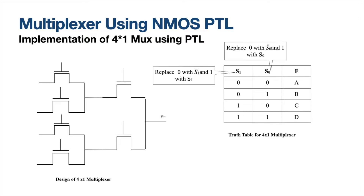Now let us do the same for a 4x1 multiplexer, where we will have four inputs A, B, C, D. Therefore, 2² gives us two control signals S0 and S1. We have four inputs A, B, C, D, so at one time, whenever the control option is 00, we will be having only one variable at the output — either A, B, C, or D.